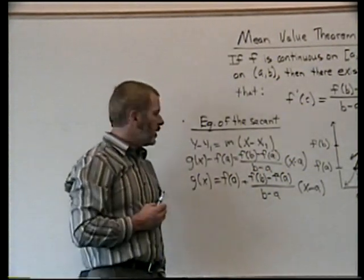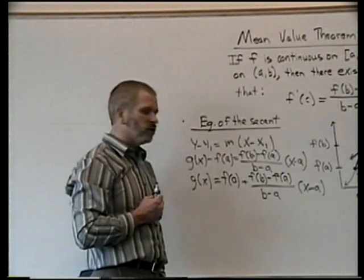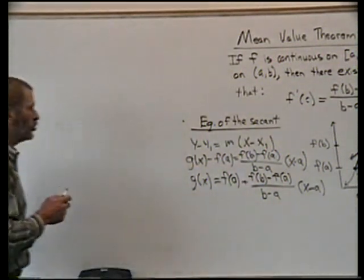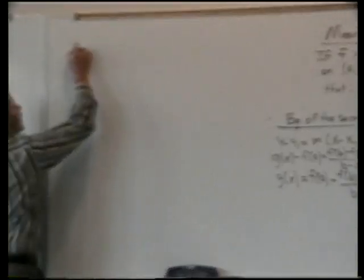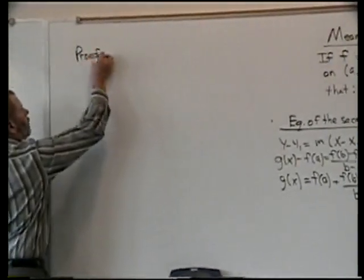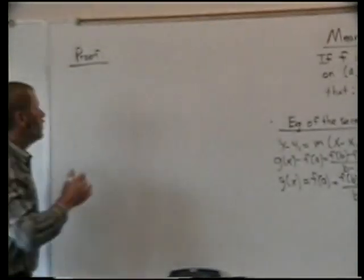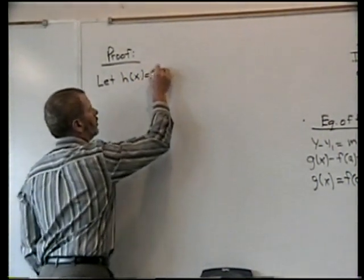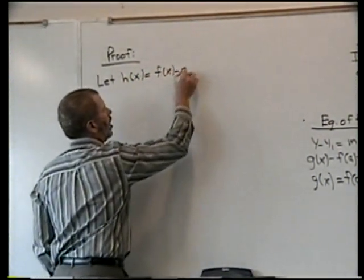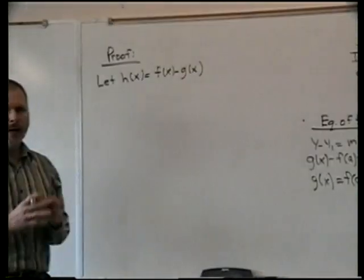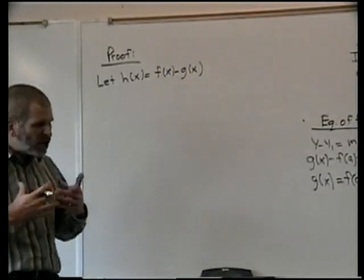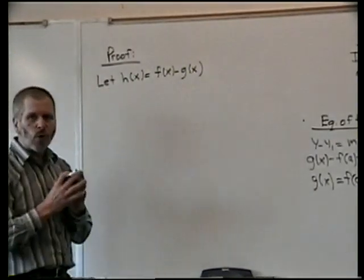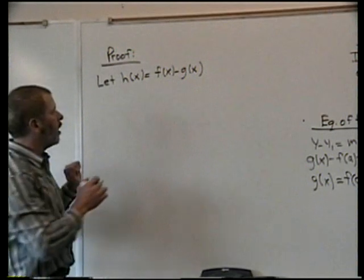Let's look and see if we can make the conditions for Rolle's theorem be satisfied relative to that h function. We'll look at the proof of the mean value theorem. We're going to start by letting h(x) equal f(x) minus g(x). That gets our f function into a relationship, and we know conditions for Rolle's theorem can be satisfied by doing that.